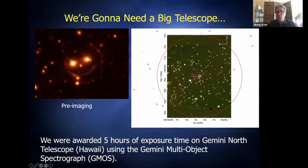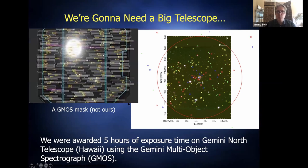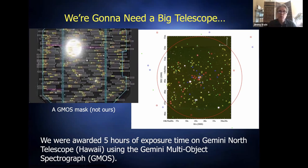A number of galaxies had velocities inconsistent with being in the group — they were either much closer or much farther away — so we excluded those. In total, 48 galaxies had redshifts close enough to the two eye galaxies that we can confidently say they belong to the Cheshire Cat group. These are shown by red and blue boxes in the image. Red and blue correspond to the two distinct sub-groups, as I'll explain.